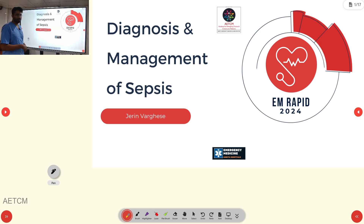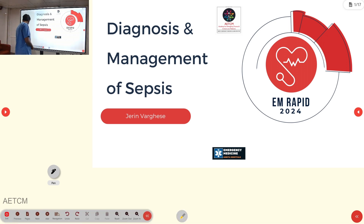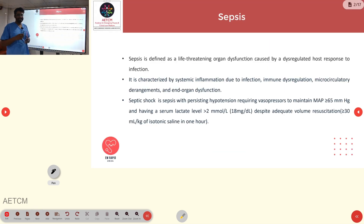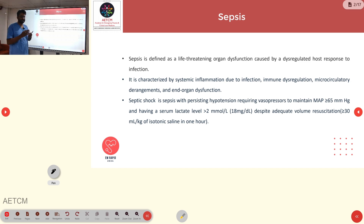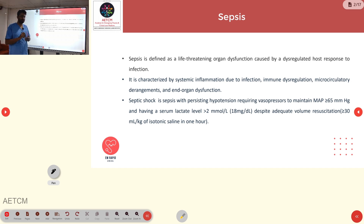We will first go over some definitions. Sepsis can be defined as a life-threatening organ dysfunction which occurs due to dysregulated host response to infection. It can be characterized by inflammation due to infections, immune dysregulation, microcirculatory derangements, and organ dysfunction.